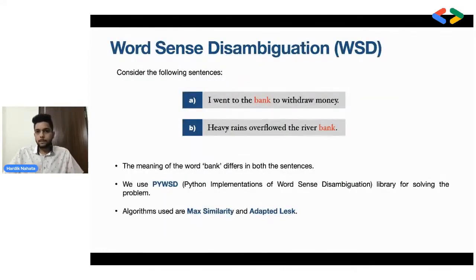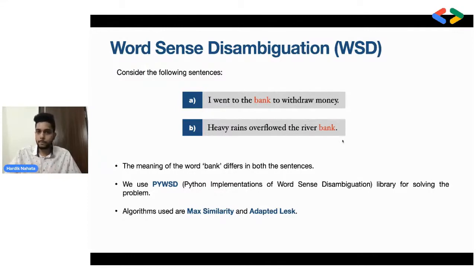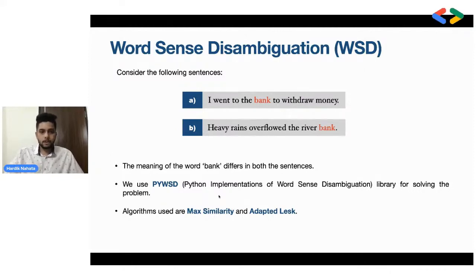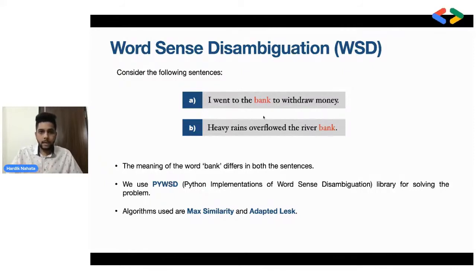Before using WordNet, we need to understand word sense disambiguation. Consider these two sentences: 'I went to the bank to withdraw money' and 'Heavy rains overflowed the river bank.' The word bank is the same in both but the meaning is completely different. We use PyWSD — Python implementations of Word Sense Disambiguation — to handle this. We use the max similarity algorithm, which maximizes the sense similarity of all words in the sentence and compares it with the ambiguous word's synset to determine which context applies.